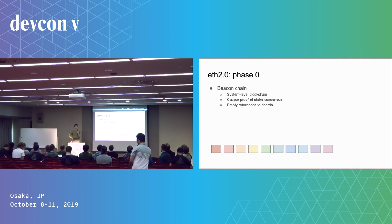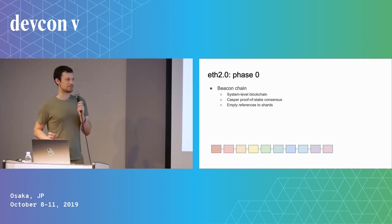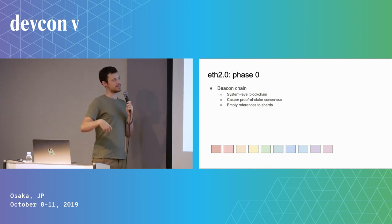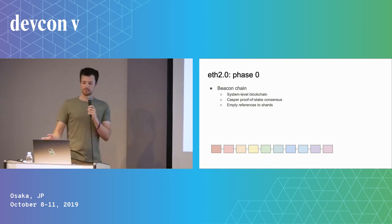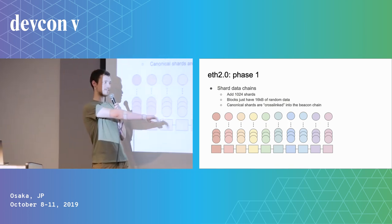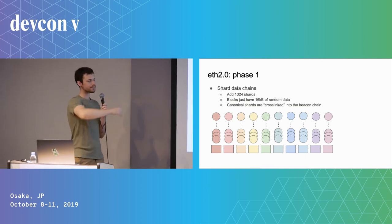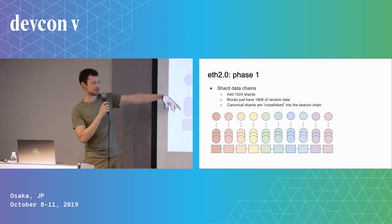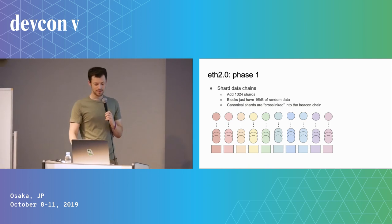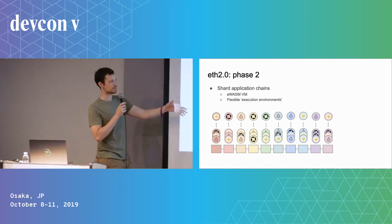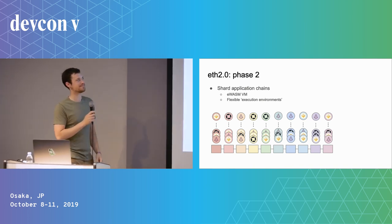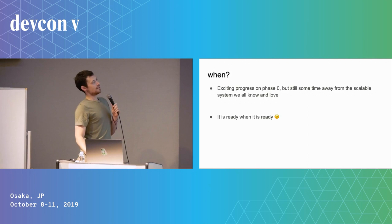Briefly, ETH 2.0 has a beacon chain — it's a proof of stake blockchain, a completely new chain from the existing one — and it's going to build out a new sharded system. The beacon chain is the system chain that operates and manages validators. From there we have all these shard chains — let's say there are about a thousand of them — where user-level transactions will happen.